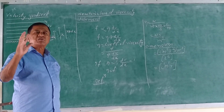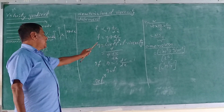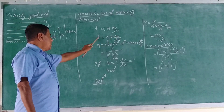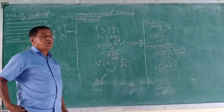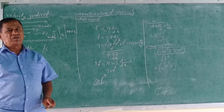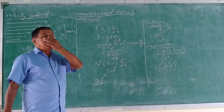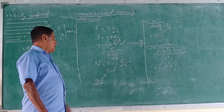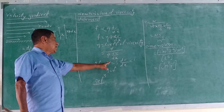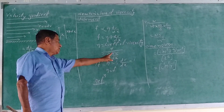The proportionality constant depends on the liquid. The formula is F = η·A·(dv/dx), where A is the surface area and dv/dx is the velocity gradient.